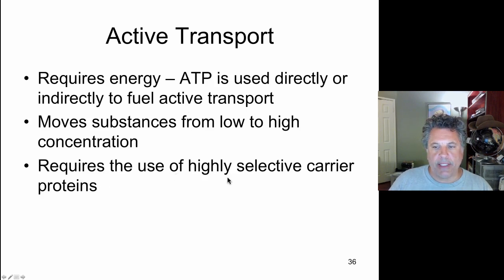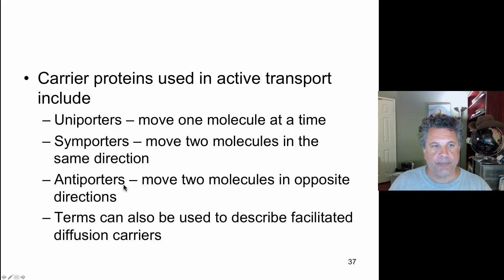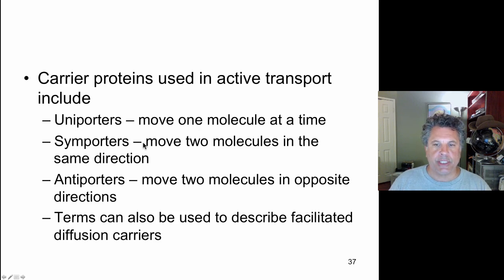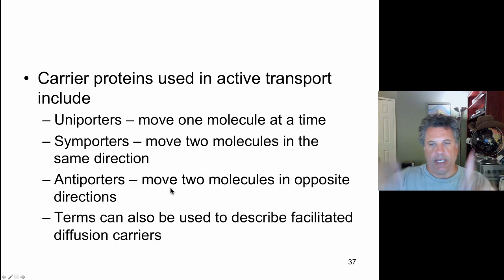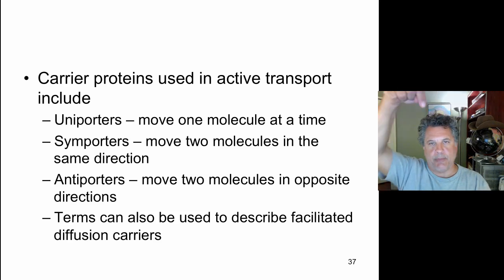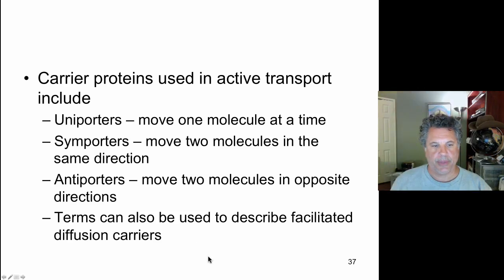Active transport requires highly selective carrier proteins to conduct the transport. The carrier proteins in active transport include several classes. Uniporters move one type of molecule at a time. Symporters are selective for two molecules and move them in the same direction. Antiporters move two molecules in opposite directions. You can describe facilitated diffusion carriers in the same way — as uniporters, symporters, or antiporters — but in the case of facilitated diffusion, you're talking about passive transport.